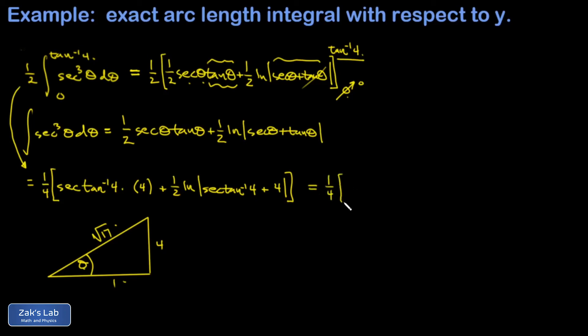So my answer continues to simplify and I have one fourth times four root 17. And I just realized when I factored out that one half, I forgot to remove it from the natural log term. So I'm going to fix that real quick. And then I have a natural log absolute value again, secant of the angle whose tangent is four, which turns out to be root 17. And then plus four, and maybe it's nicest to go ahead and distribute the one fourth back into this thing. And I get an exact arc length of root 17 plus one fourth natural log, I don't need the absolute value signs anymore, because I can see this argument is positive. So one fourth natural log four plus root 17. And we're done.